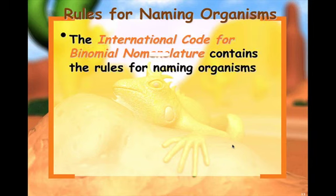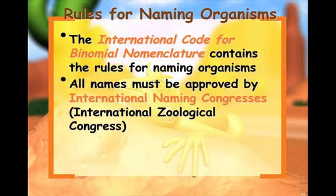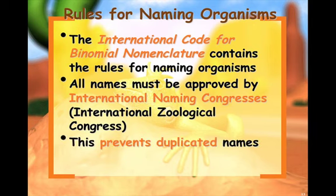The group responsible for naming rules is the International Code for Binomial Nomenclature, which contains the rules for naming organisms. All names must be approved by the International Naming Congress, sometimes called the International Zoological Conference. This prevents duplicate names — no two species can have the same name.